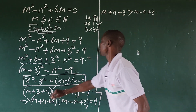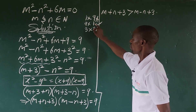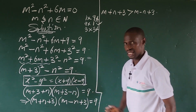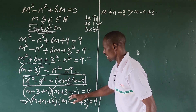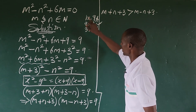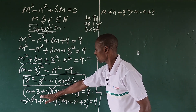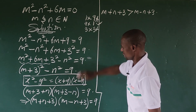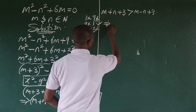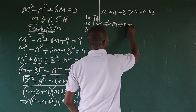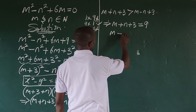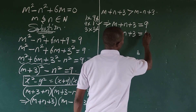The only valid option is to equate (m + n + 3) = 9 and (m − n + 3) = 1, because (m + n + 3) must be greater than (m − n + 3). So our two equations are: m + n + 3 = 9 and m − n + 3 = 1.